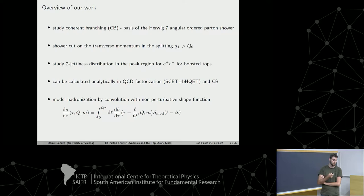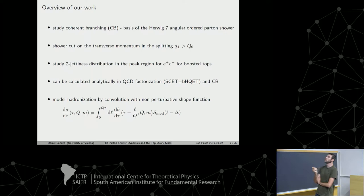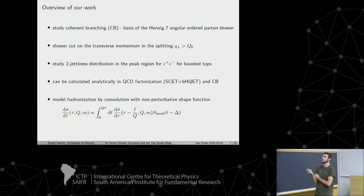We study the coherent branching formalism, which is the basis of the HERWIG 7 angular parton shower. We implement the shower cutoff as it is implemented there — a cut on the transverse momentum, vetoing any splitting with transverse momentum smaller than the shower cutoff Q0. We use the observable two-jettiness in e+e− collisions for boosted tops, an event shape telling you how jet-like an event is. I will call this observable tau, or sometimes thrust, using these words interchangeably.